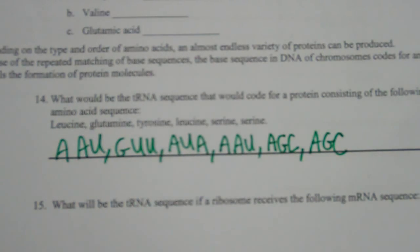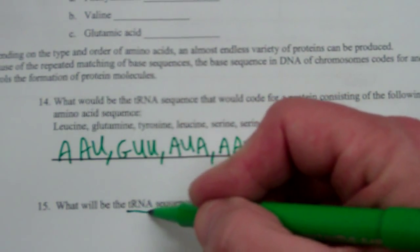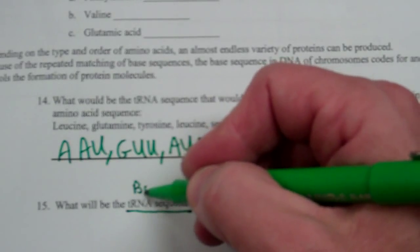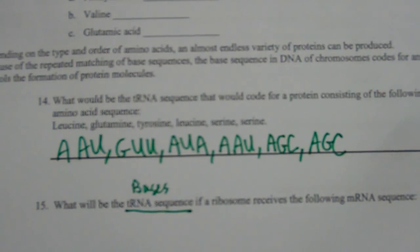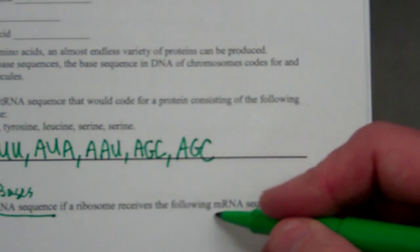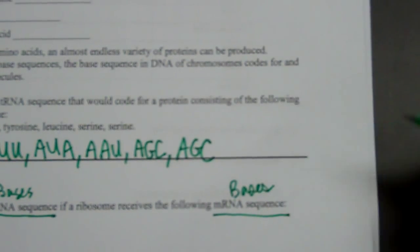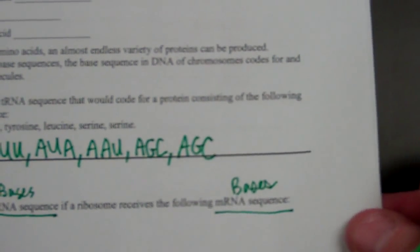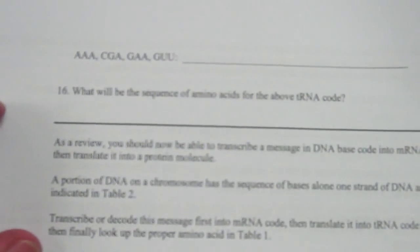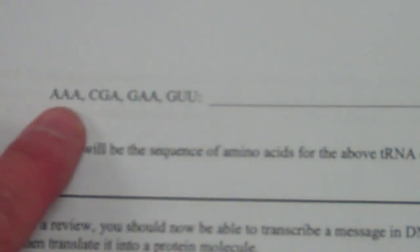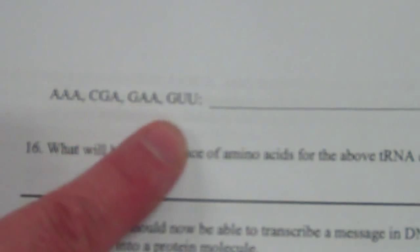Now question 15 says: what will be the tRNA sequence if a ribosome receives the following mRNA sequence? What will be the tRNA bases if a ribosome receives the following messenger RNA sequence of bases? So I want to give my answer in bases for tRNA. This is question 15; it goes on to the next page. I've got to look at my messenger RNA sequence that they gave me. Here is my messenger RNA sequence: it's AAA, GCA, GAA, and GUU.